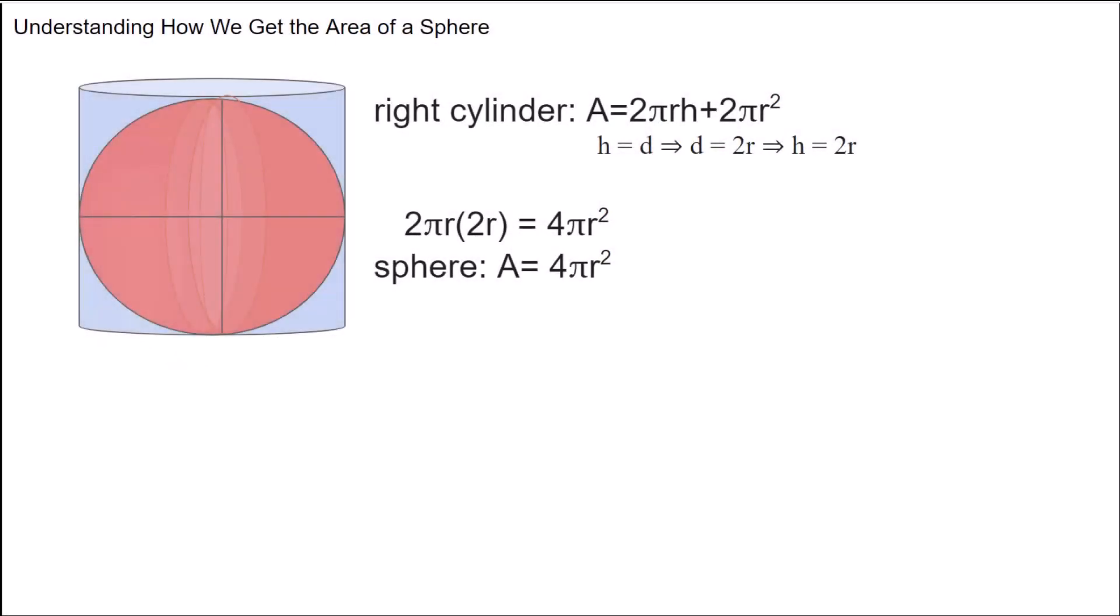We've been talking about circles, but let's talk about spheres for a minute. Let's talk about a partially related shape, and that is a right cylinder. To find the area of a right cylinder, you would take 2πr times the height plus 2πr².